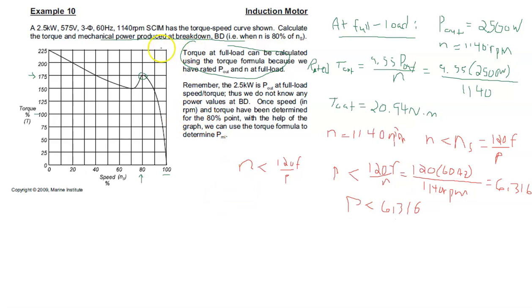So we know that p is less than 6.316. Remember, p is poles per phase. And the fact that this is a squirrel cage induction motor means p must be equal to 6 poles per phase. Then our calculation for Ns, 120 times f divided by p, gives us 1200 RPMs.